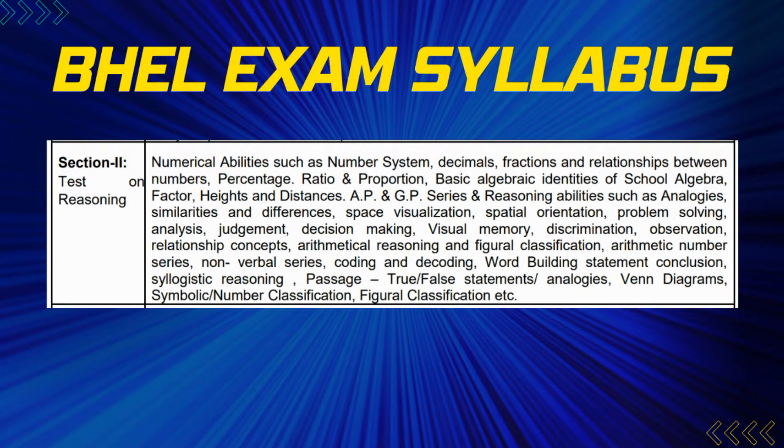Next is the test on reasoning — Section 2. Numerical abilities include: numbers, sum, decimals, fractions and relations between numbers, percentage, ratio and proportion, basic algebraic identities of school algebra, upper factor, heights and distances, AP and GP, series. Reasoning abilities include: analogies, similarities and differences, space visualization, spatial orientation, problem solving, analysis, judgment, decision making, visual memory, discrimination, observation, and relationship concepts.